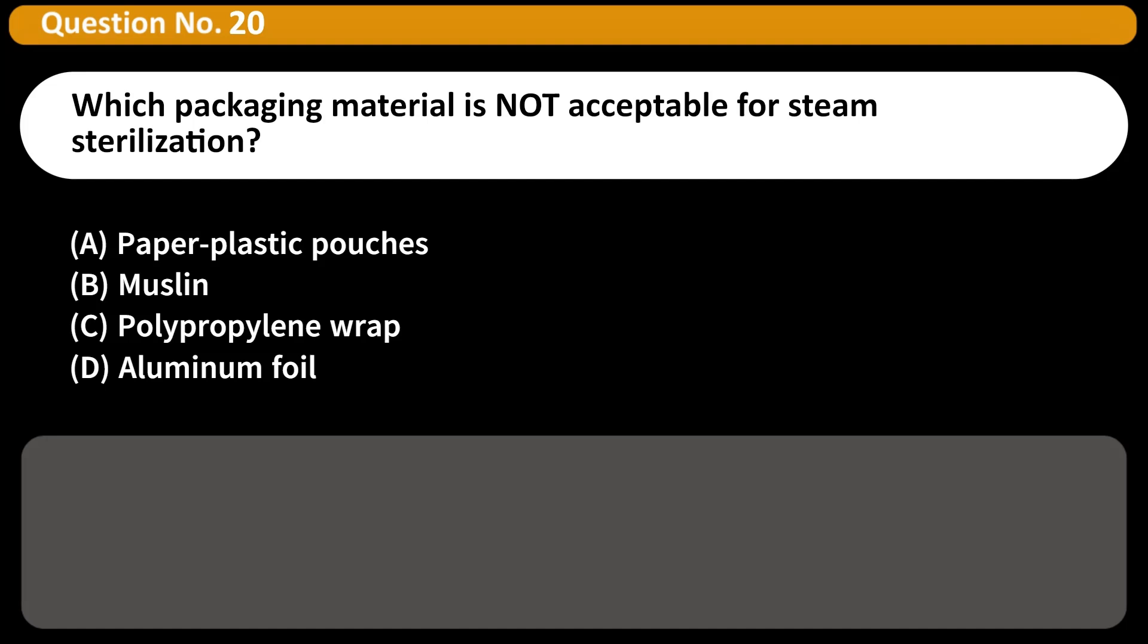Which packaging material is not acceptable for steam sterilization? A. Paper plastic pouches, B. Muslin, C. Polypropylene wrap, D. Aluminum foil. Answer D. Aluminum foil cannot be penetrated by steam and is not used in sterilization.